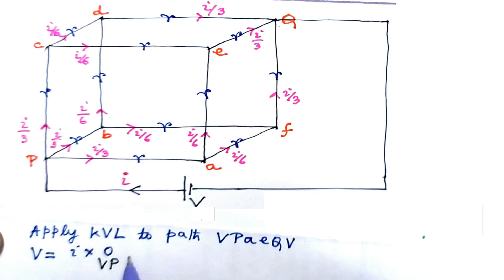i by 3 into resistance along pa which is r, plus i by 6 into resistance along ae which is r, plus...